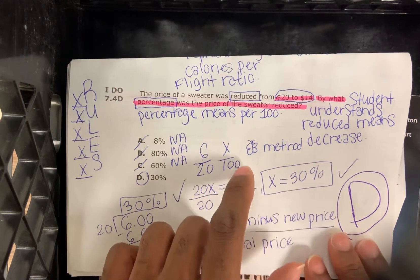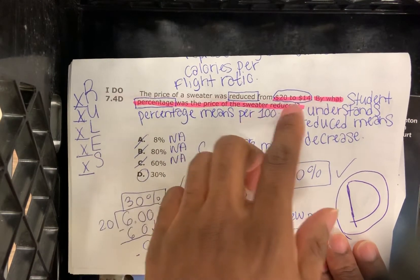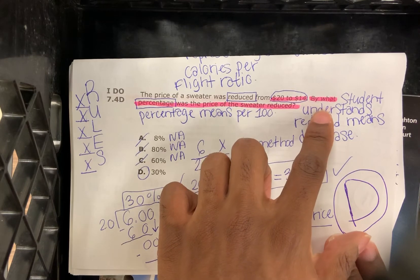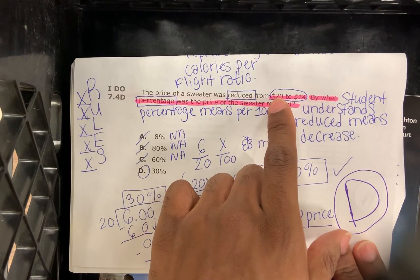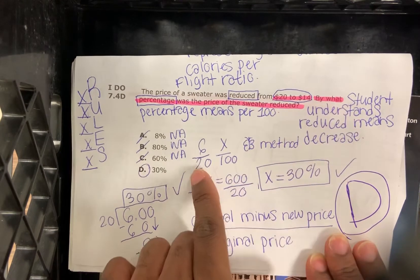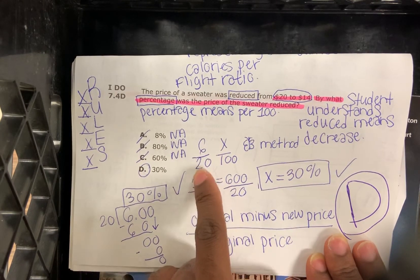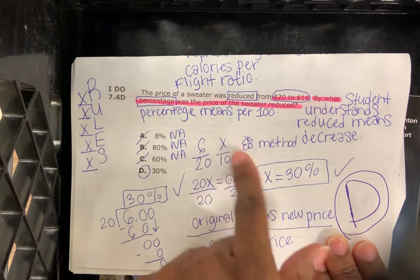All right, that's what you have to understand. We're going to use the butterfly method. So 20 minus 14 is 6. It's going to be the difference between the old price and the new price over the old price. So we have 6 over 20 equal to X over 100.